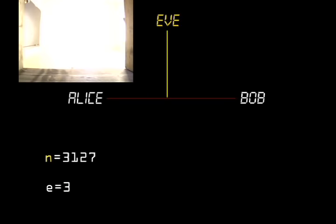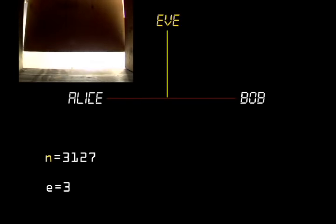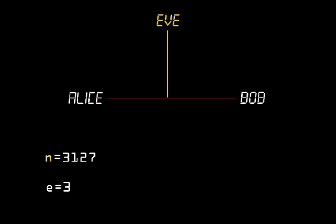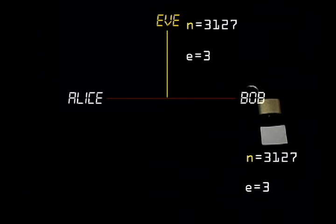Now, she hides everything except the value of n and e, because n and e make up her public key. Think of it as an open lock. She sends this to Bob to lock his message with.